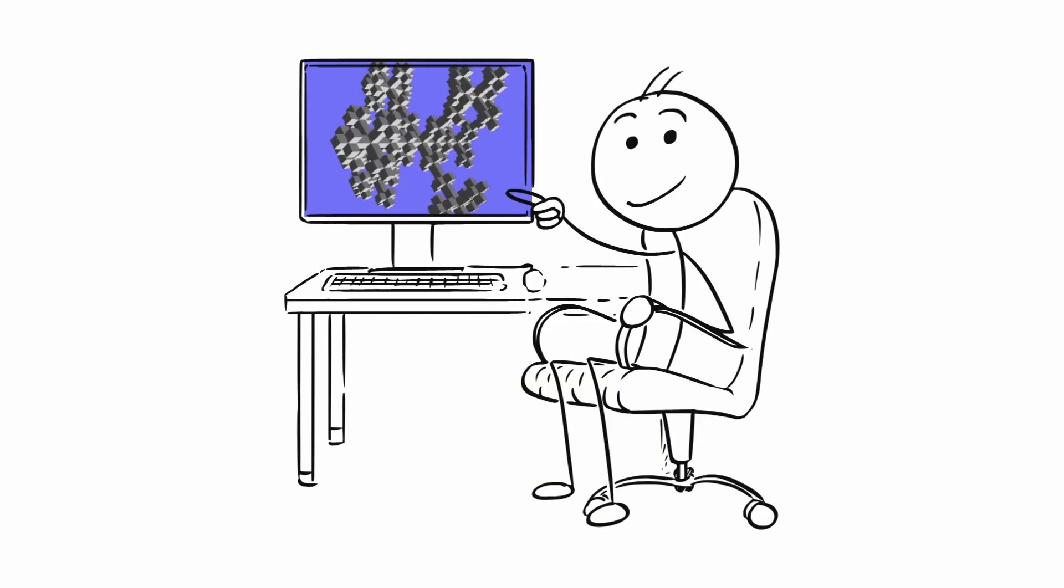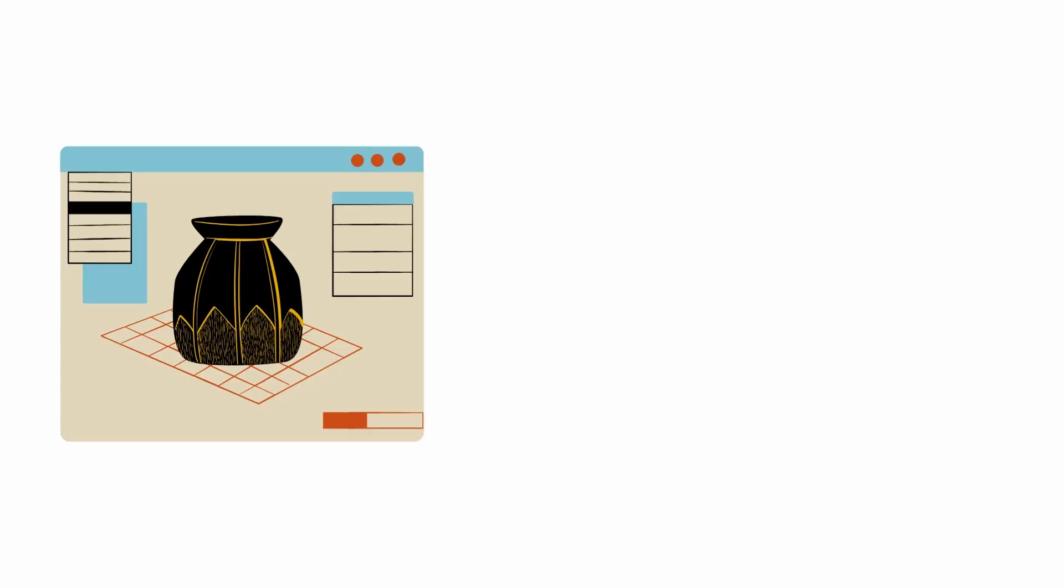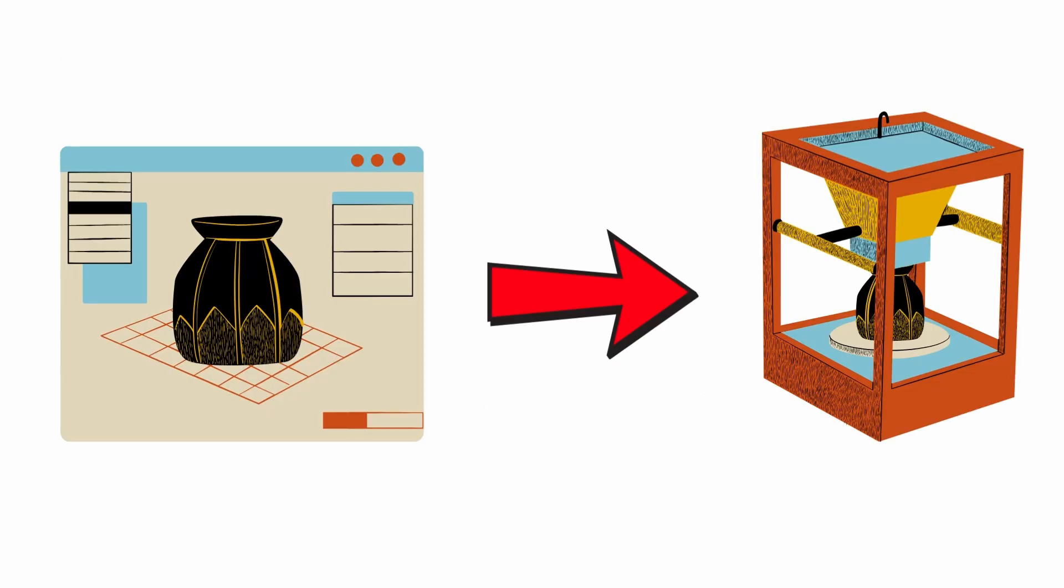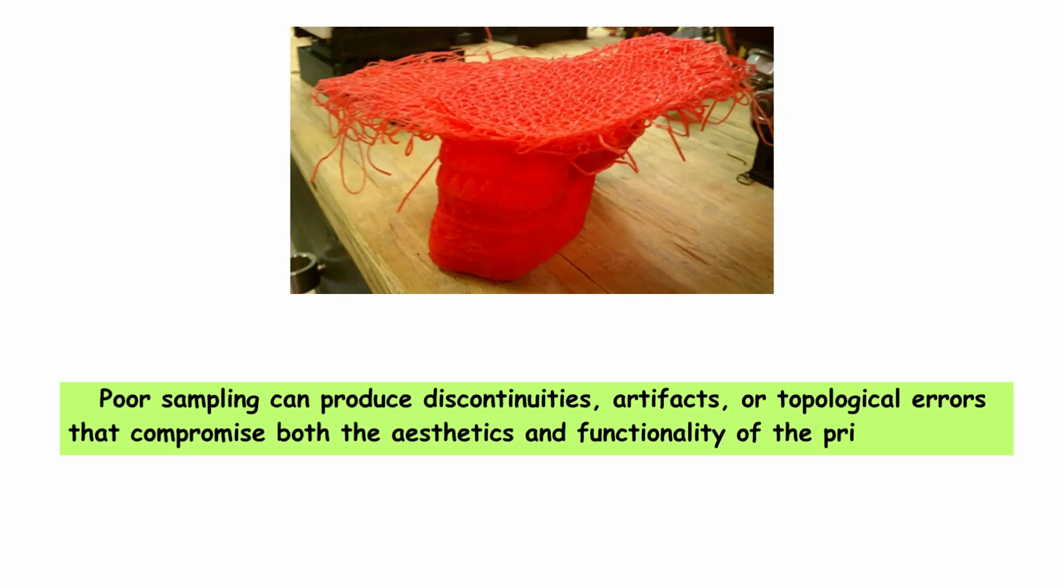Fractals, on the other hand, offer infinite self-similar shapes that can be truncated to practical levels for printing generating highly efficient textures or internal structures. The precision of these shapes directly depends on the density of the parametric sampling. The higher the parameter resolution, the more faithful the printed shape will be to the original mathematical surface. Poor sampling can produce discontinuities, artifacts, or topological errors that compromise both the aesthetics and functionality of the printed object.